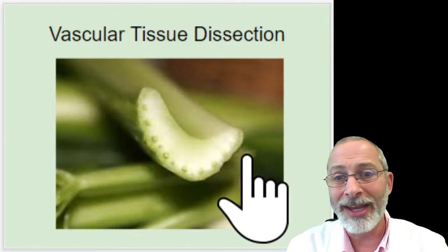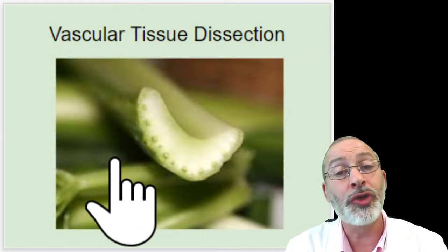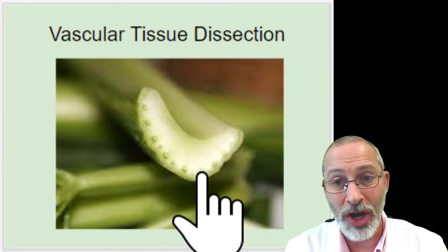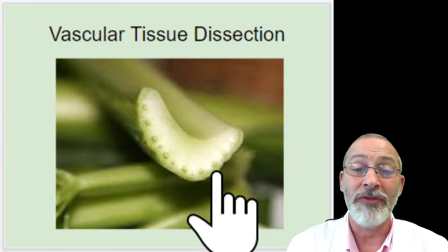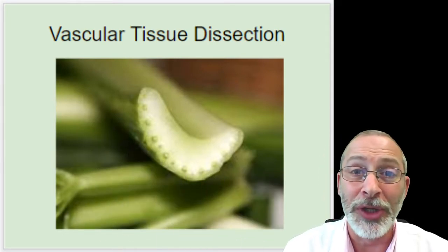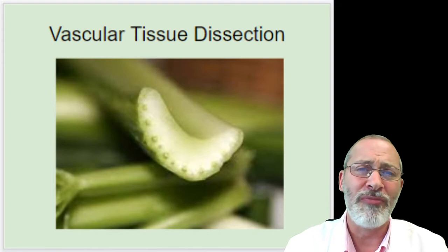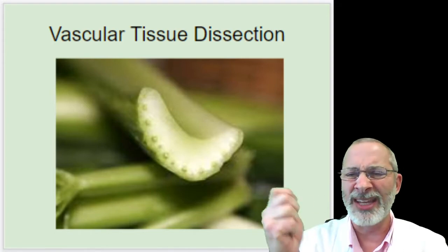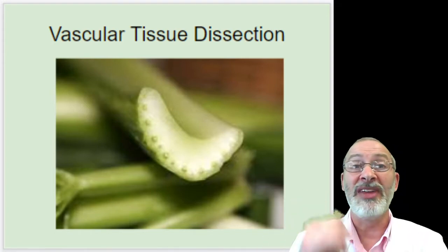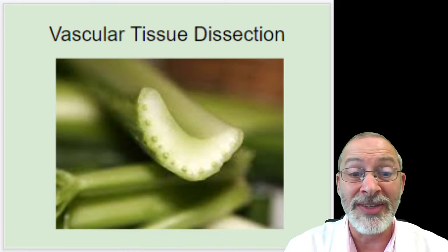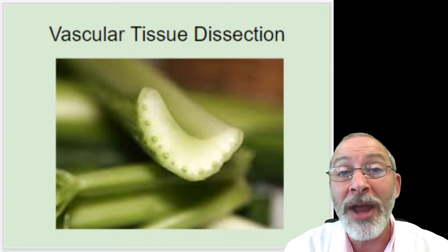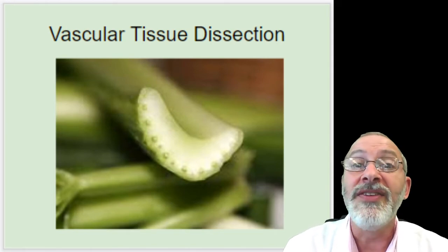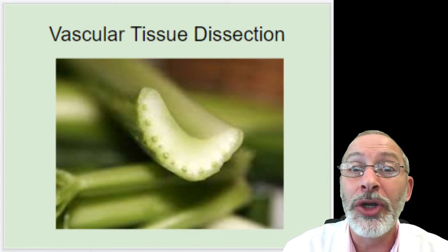Hopefully you recognize this cross section of a celery stalk. Maybe you've eaten celery raw and you've bit into it and noticed that it's kind of stringy — maybe even get those strings in your teeth. Well, that stringy stuff is vascular tissue.